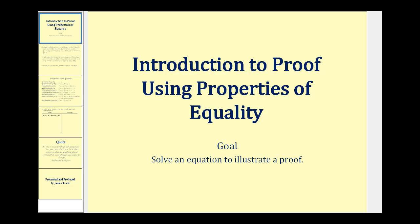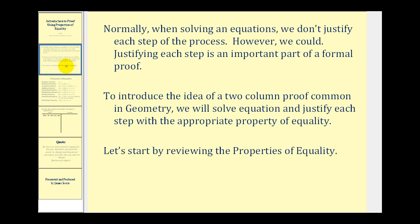Welcome to an introduction to proof using properties of equality. The goal is to solve an equation to illustrate a two-column proof. Normally when we solve equations, we don't justify each step of the process — however, we could. Justifying each step is an important part of a formal proof. To introduce the idea of a two-column proof in geometry, we will solve an equation and justify each step with the appropriate property of equality.